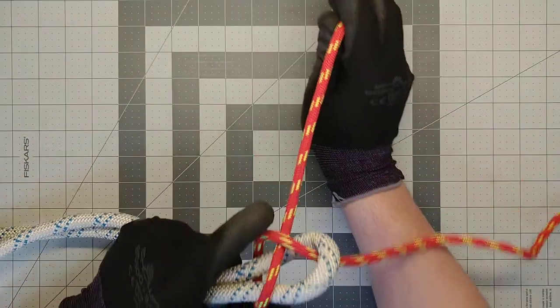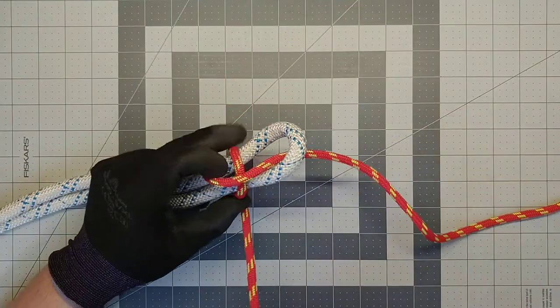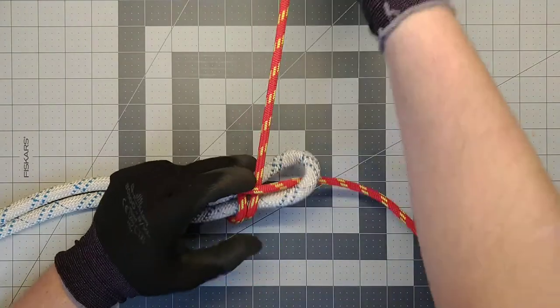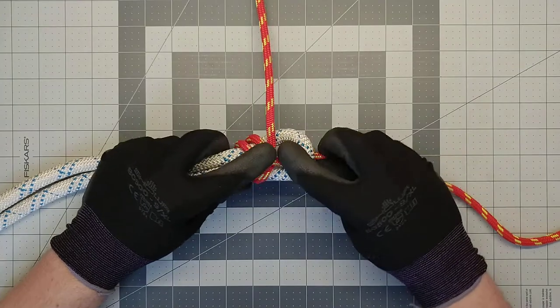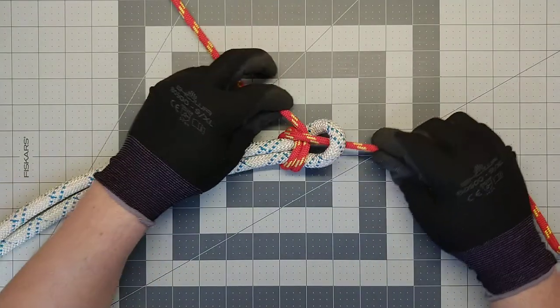For those of you fire academy students, only go around once. But you get a little more grip coming around that second time. We'll call that a double becket bend.